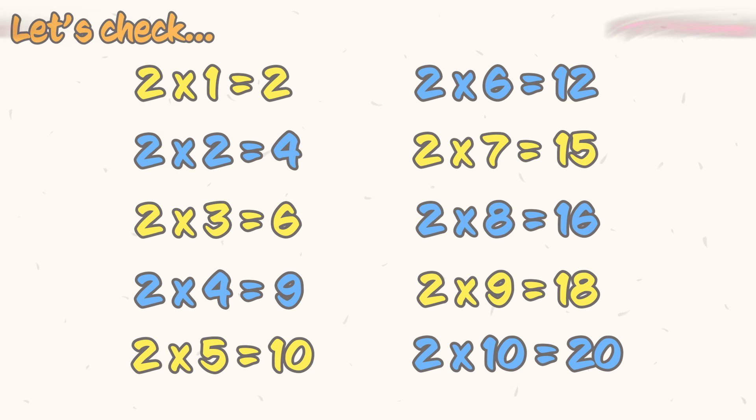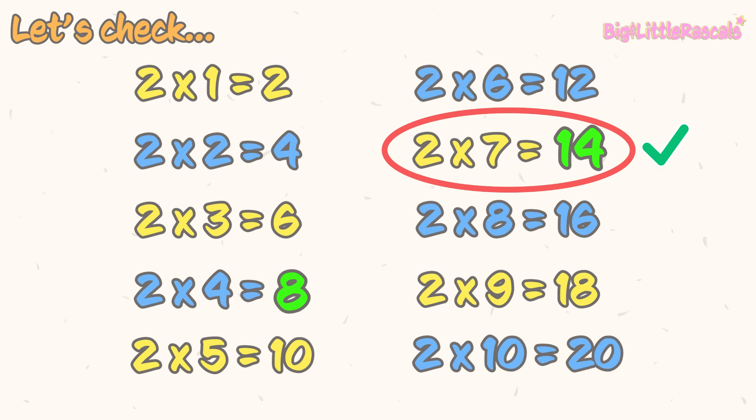First, 2 times 4 equals 8, not 9. And next, 2 times 7 equals 14, not 15. Do you get them all correct? Well done!